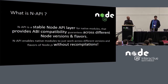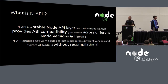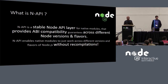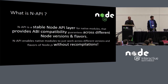So let's start to answer this question: What is NAPI? NAPI is a stable Node API layer for native modules that provides ABI compatibility guarantees across Node versions and different flavors as well.